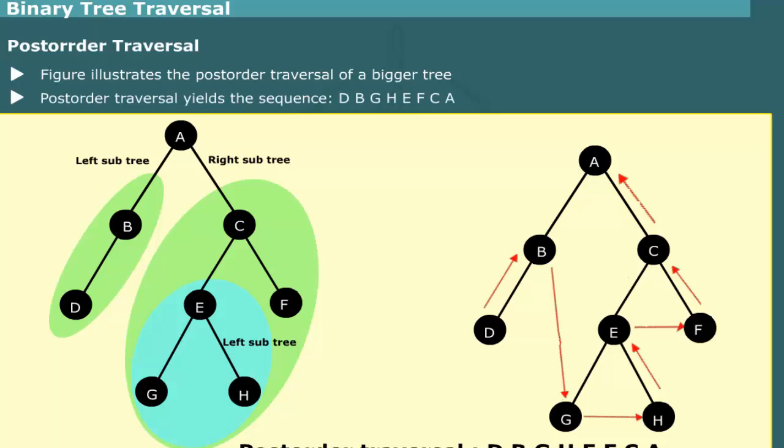Thus, post-order traversal yields the sequence D, B, G, H, E, F, C, A.